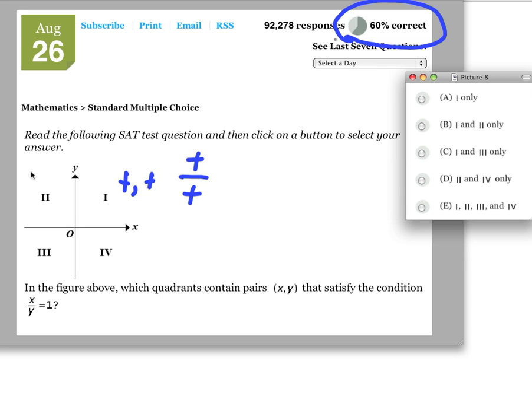In the second quadrant though, we have a negative x and a positive y. So there's no way that x over y can equal 1 if one is negative and the other is positive.